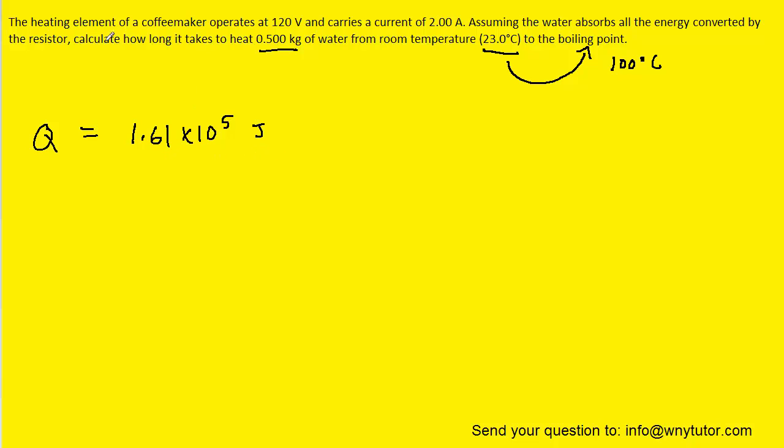This energy comes from the heating element of the coffee maker. The power produced by the coffee maker equals the current multiplied by the potential difference: P = I·V. We were given the potential difference and the current in the question, so we can plug in to get the power. When we compute that, the power equals 240 watts.